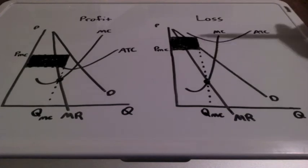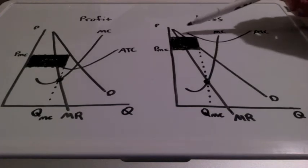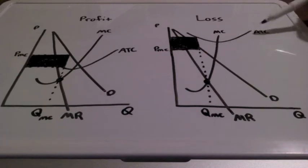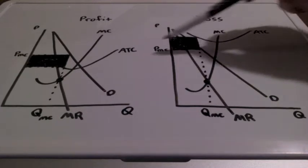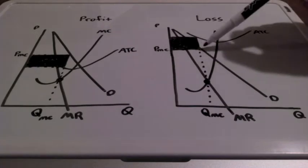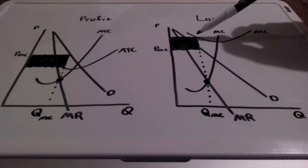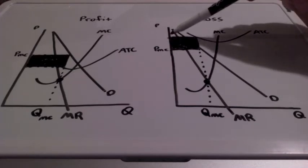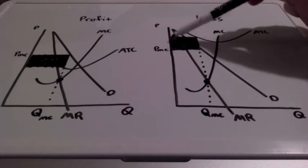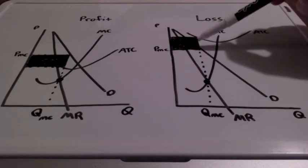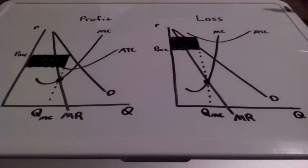And to accurately label the loss, we must draw our average total cost above the demand curve. And we find our price where it's touching demand. We bring this up to where it hits average total cost and all the way back over. This entire area shaded in black represents the loss for the firm.